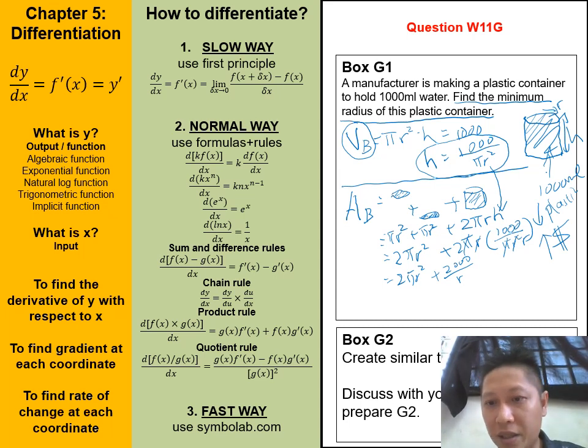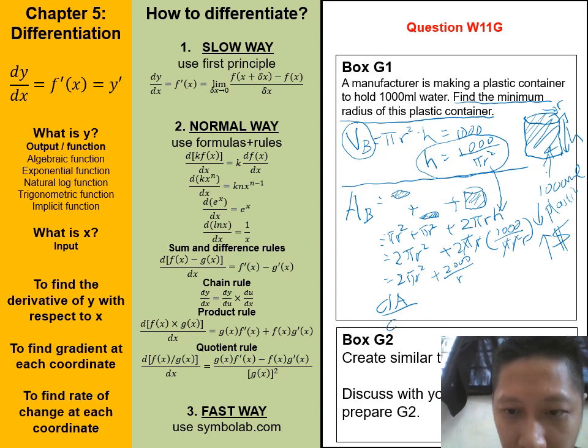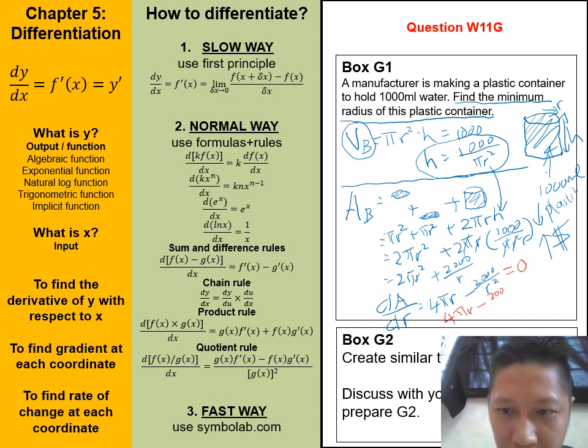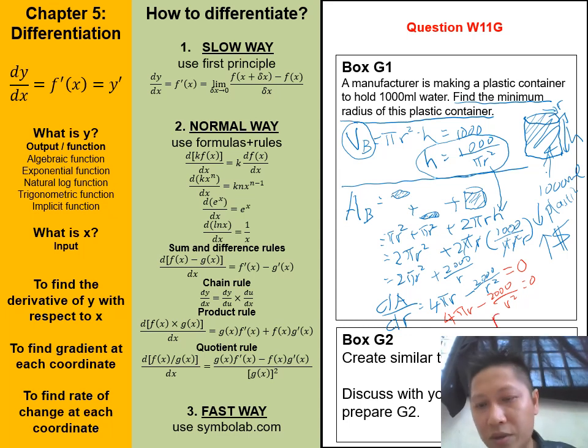Because we want to find what is the minimum or the maximum value to design this bottle, we are going to differentiate it. So that dA the area over dR equals to 4 pi R minus 2000 divided by R squared. Minimum-maximum happens when the gradient equals to 0. So 4 pi r minus 2000 divided by r squared equals 0. After doing the algebraic calculation, we're going to get r close to 5.4 cm.